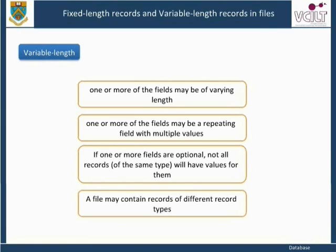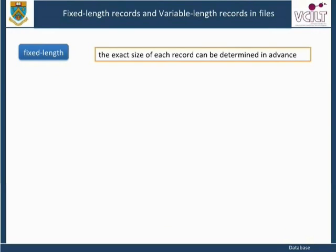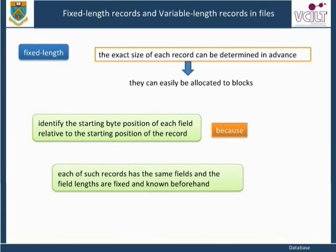A file may also contain records of different record types, in which case records in the file are likely to have different sizes. For fixed length records, the exact size of each record can be determined in advance. As a result, they can easily be allocated to blocks, and we can identify the starting byte position of each field relative to the starting position of the record, because each record has the same fields and the field lengths are fixed and known beforehand.